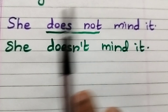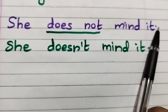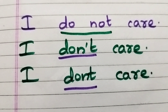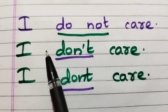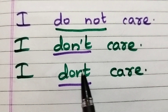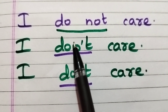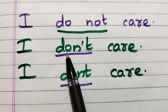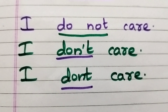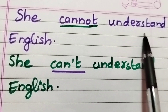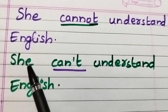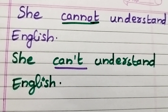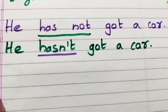The next negative sentence: 'She does not mind it' or 'She doesn't mind it.' Next: 'I do not care' or 'I don't care.' Note that 'don't' can be used in two ways — punctuated and unpunctuated. Next: 'She cannot understand English' or 'She can't understand English' — both are the same and are negative sentences.